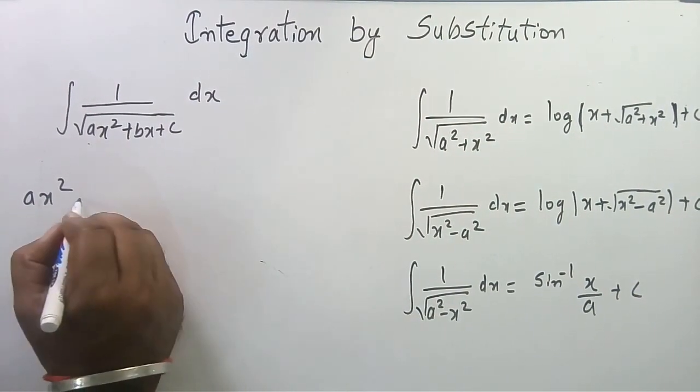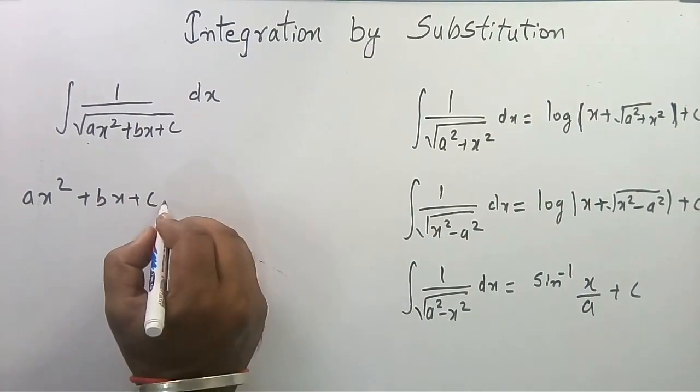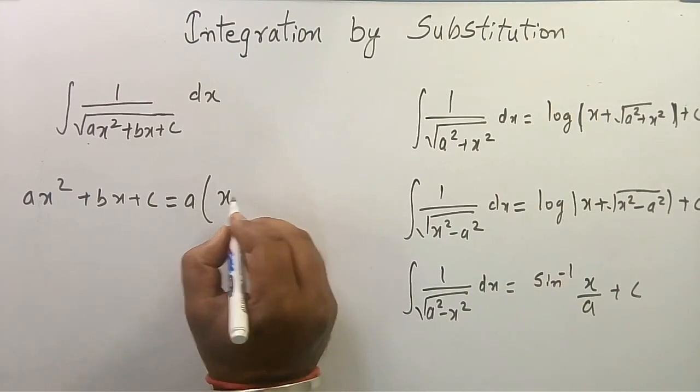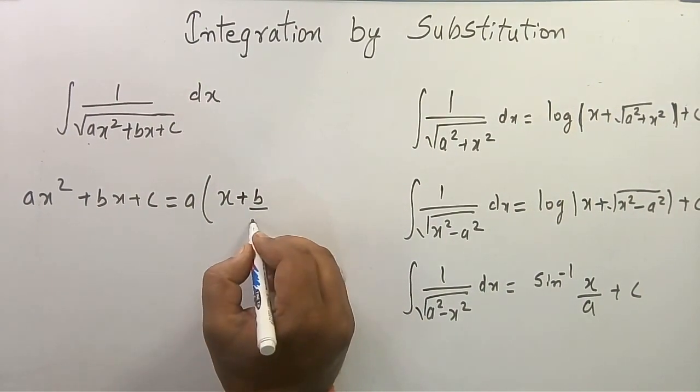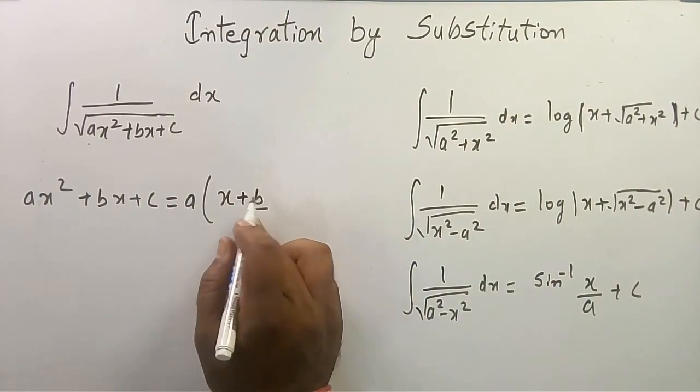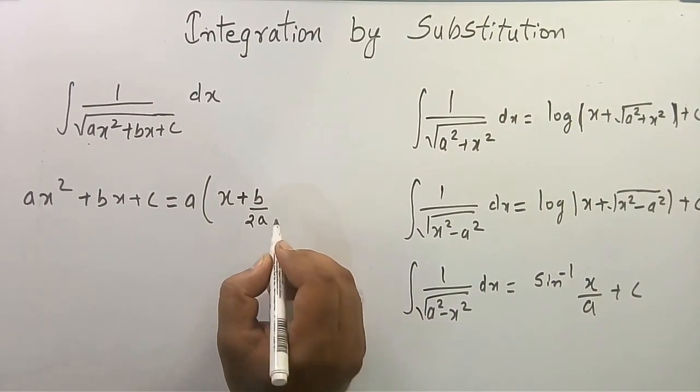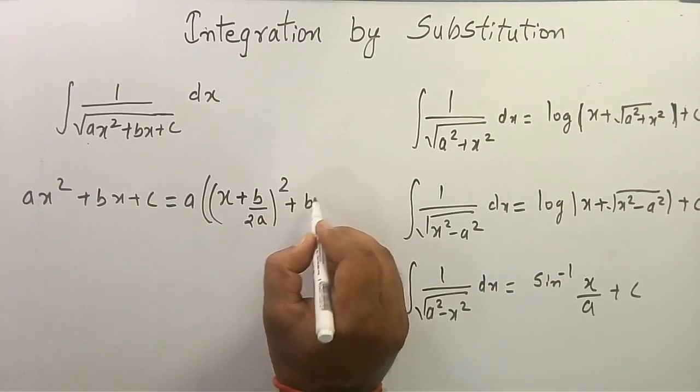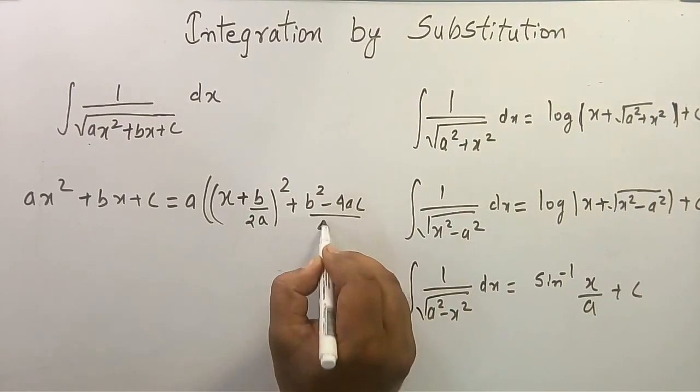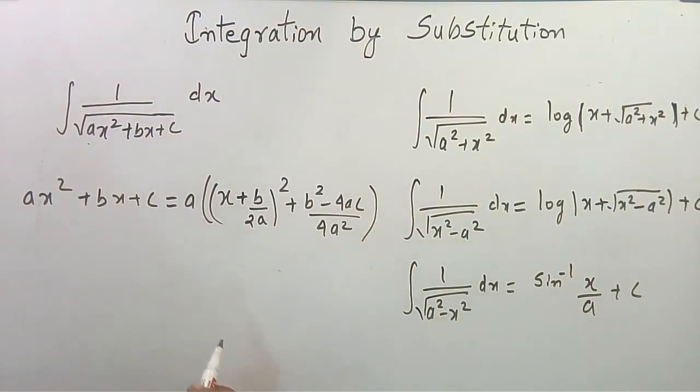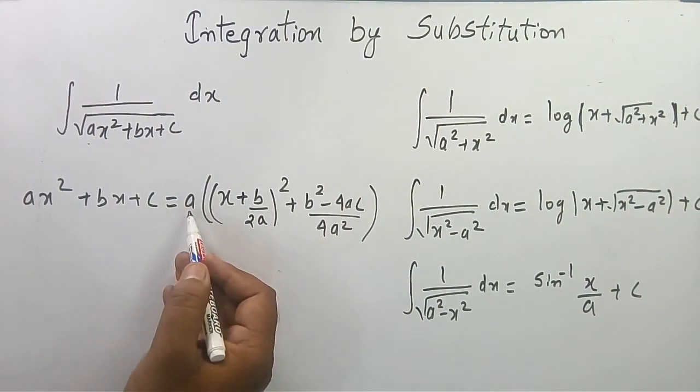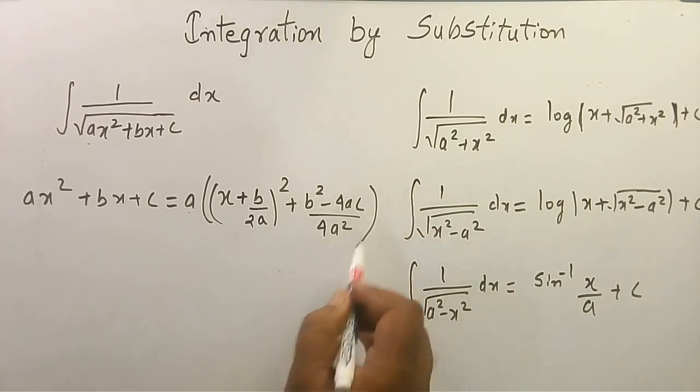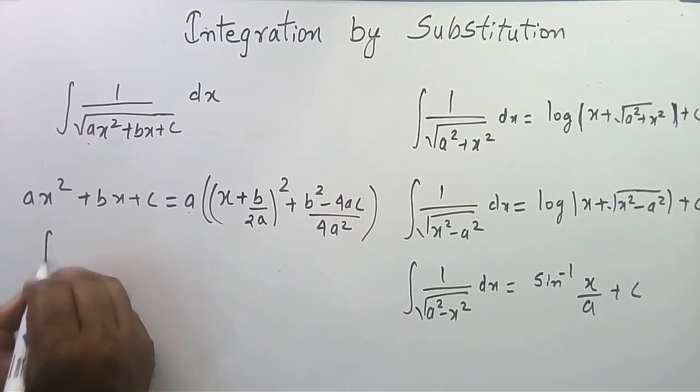So what should we use? In place of ax² + bx + c, we are writing a times (x + b/2a)² plus (b² - 4ac)/4a². So this will change like this.